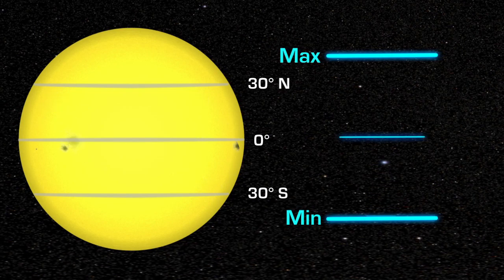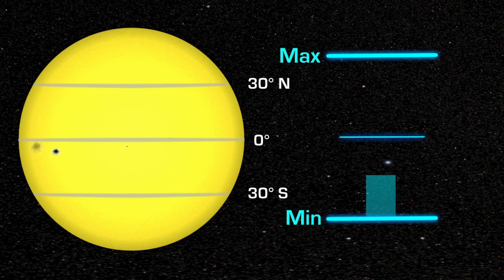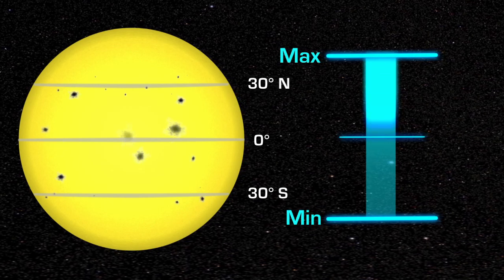At solar minimum, there are sometimes no sunspots to observe. At solar maximum, there can be many at the same time.